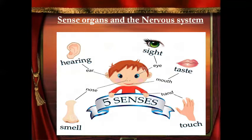Now, sense organs — how many sense organs are there? There are five sense organs: ear for hearing, nose for smelling, eyes for seeing, tongue for taste, and skin or the hands for touch.